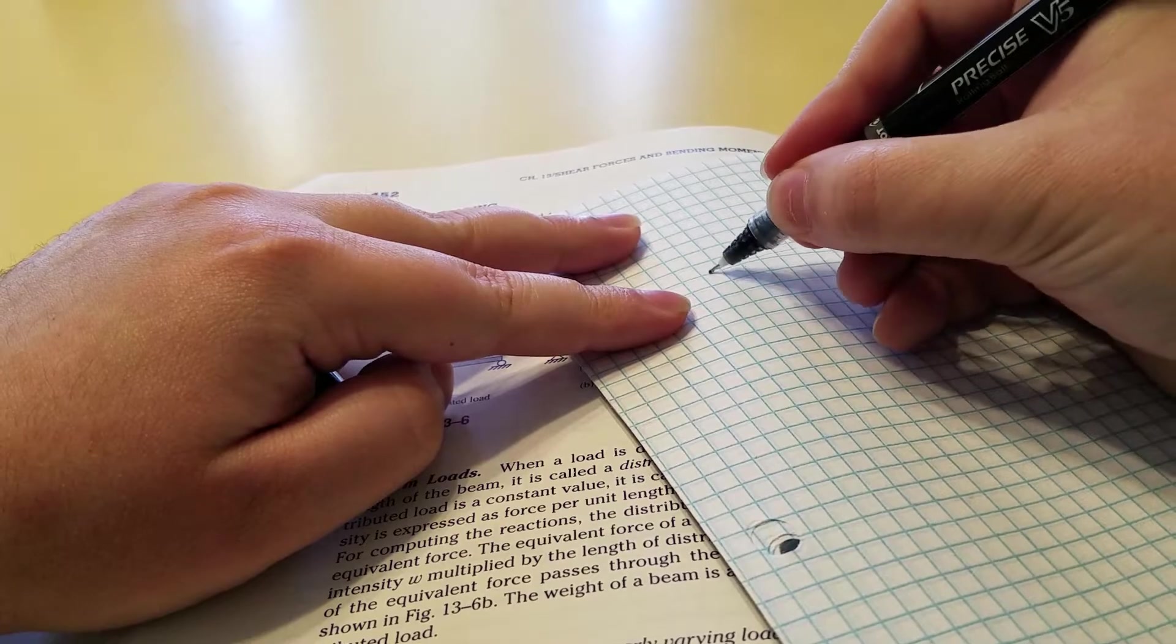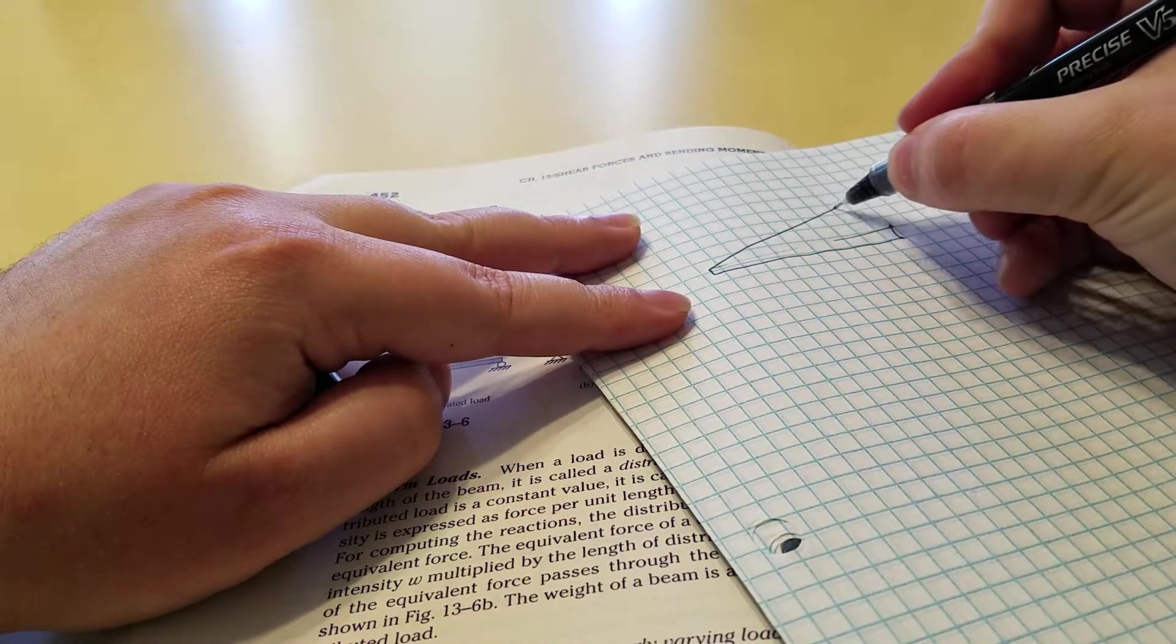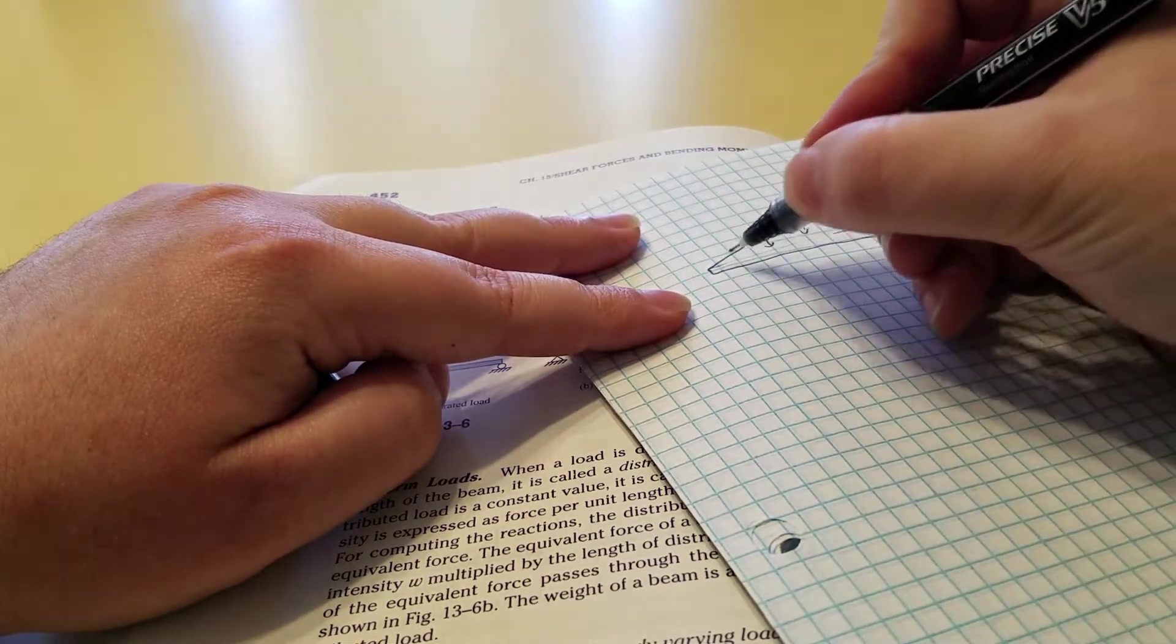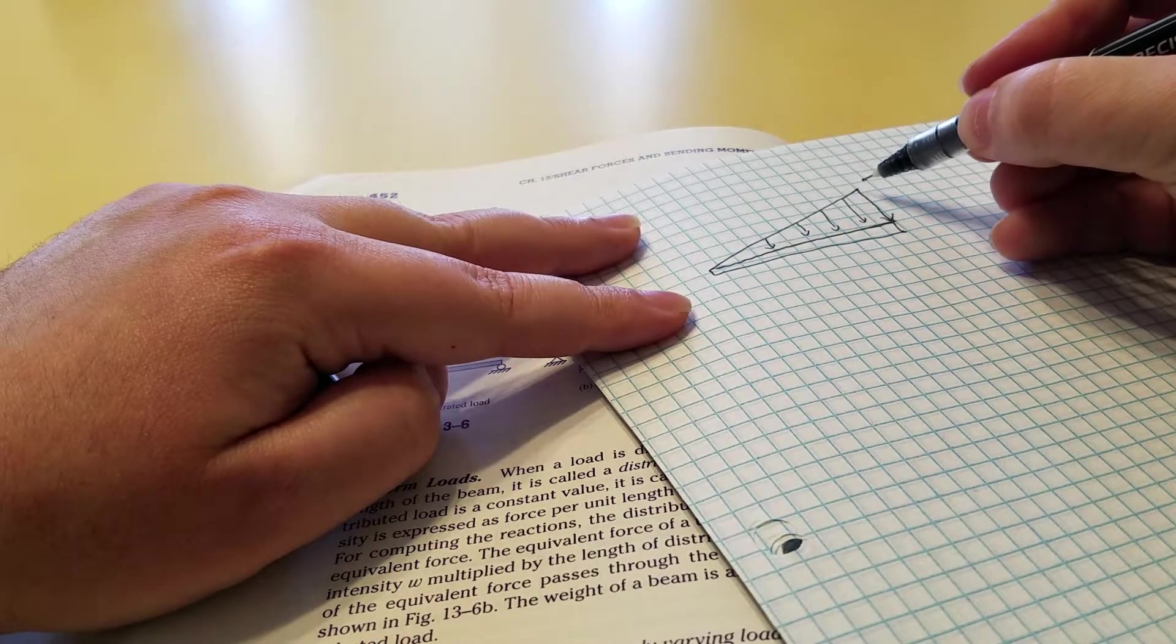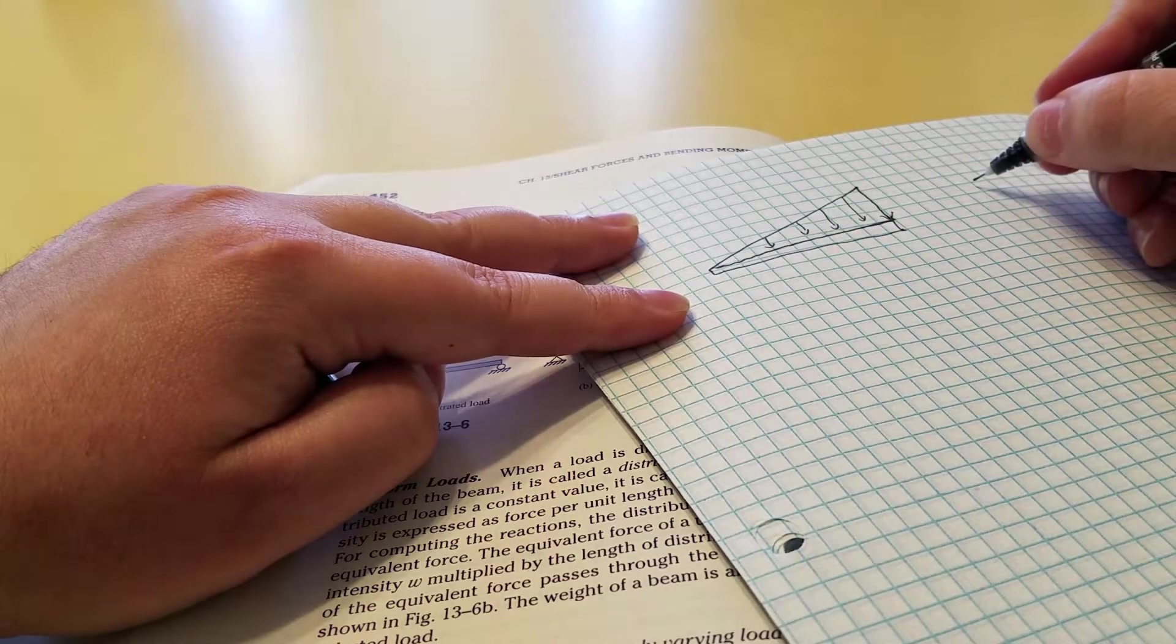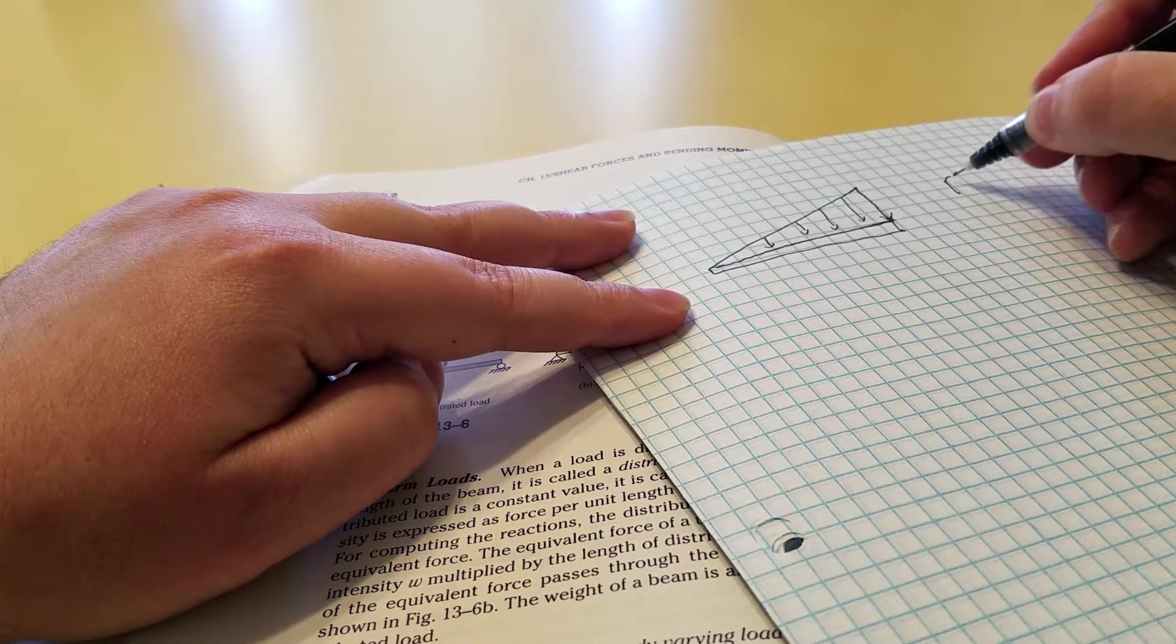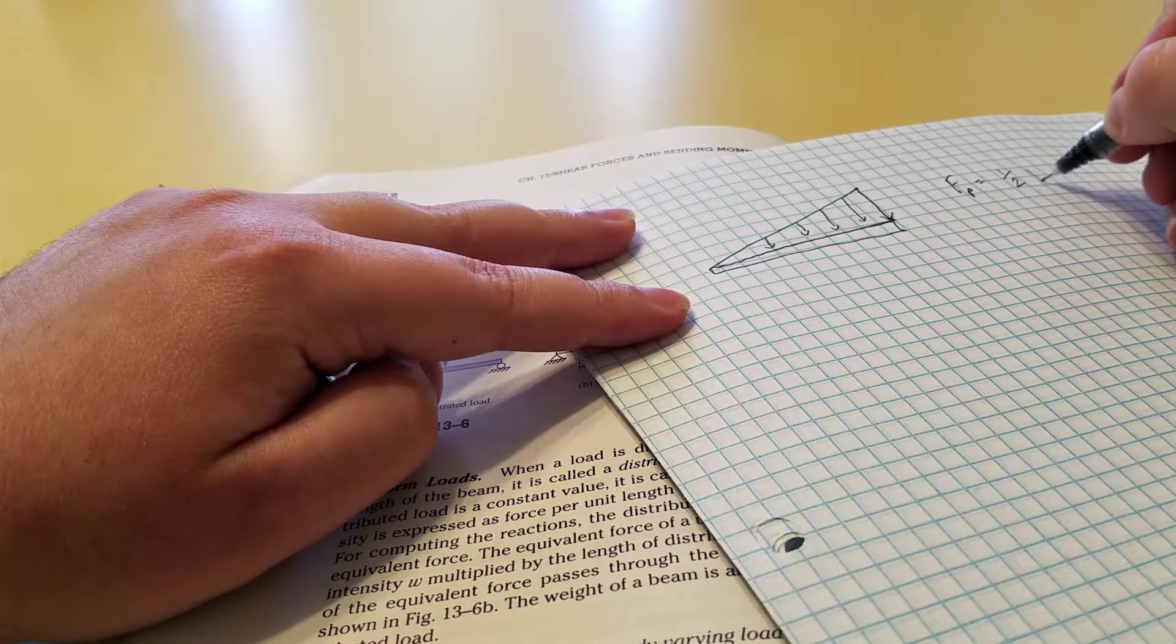Here's your beam, and you have some sort of ramping load as it approaches one end. What you're going to do is say that the total load on this is the area. So force at a point would be like one-half base times height, so that's the area of a triangle.